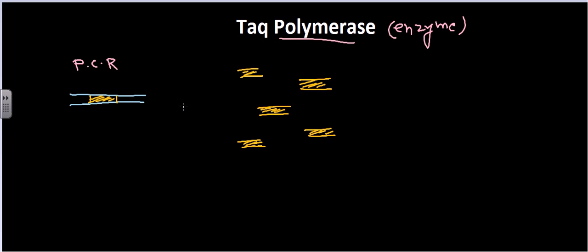For this amplification process we require many different enzymes, and among those the most important one is this polymerase. This polymerase enzyme is the key enzyme for the PCR or polymerase chain reaction process.